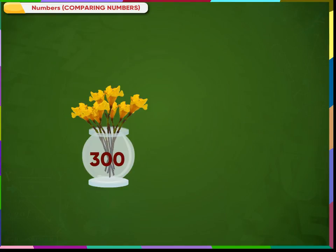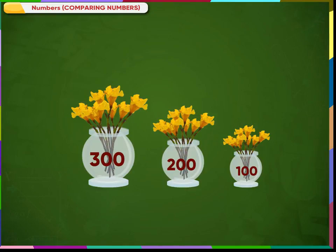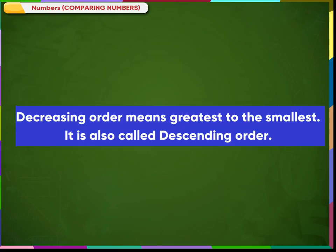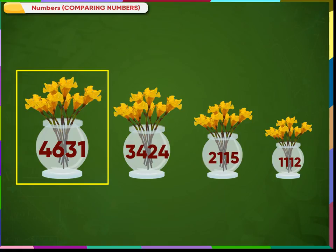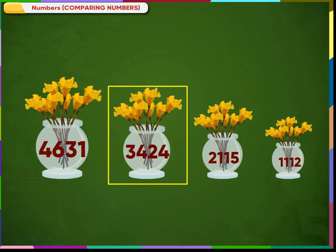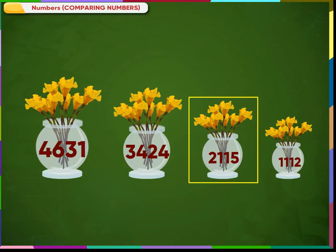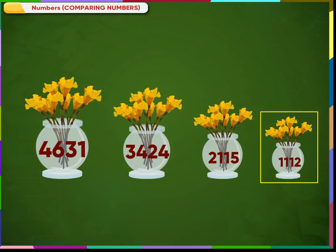We can arrange the same flower pots with numbers written on them in decreasing order. We can arrange these flower pots in decreasing order of the numbers written on them. So, the pot with number 4631 comes first, then 3424, then 2215, and at last the pot with number 1112.